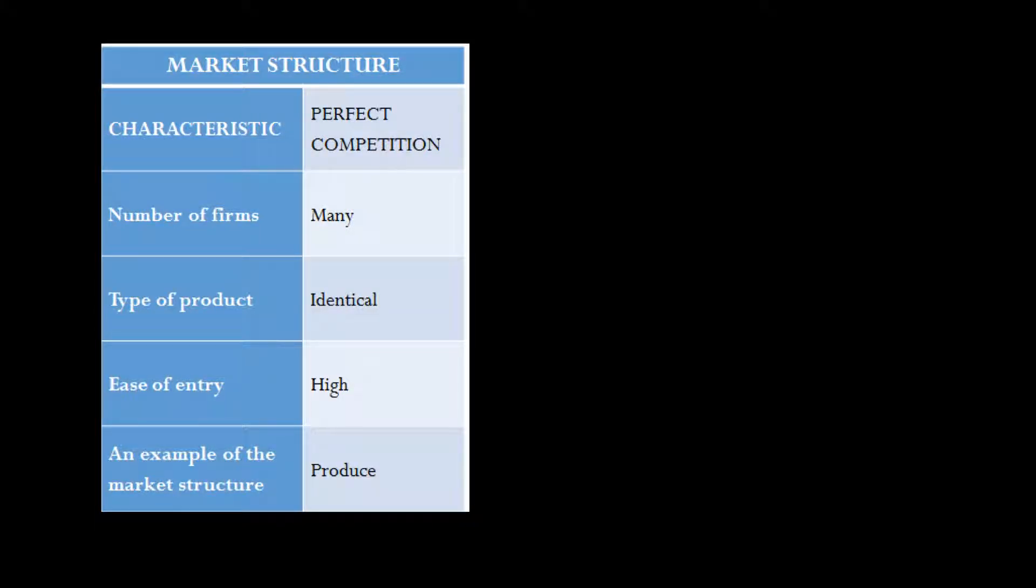In economics, when we're talking about the production side of the economy, we characterize the environment the firm is operating in as a market structure. And we say that there are four different types of market structures. We define them by answering these three questions, these three key characteristics. And when you get an answer for each one of these three, the combination comes together and creates the environment for the firm.